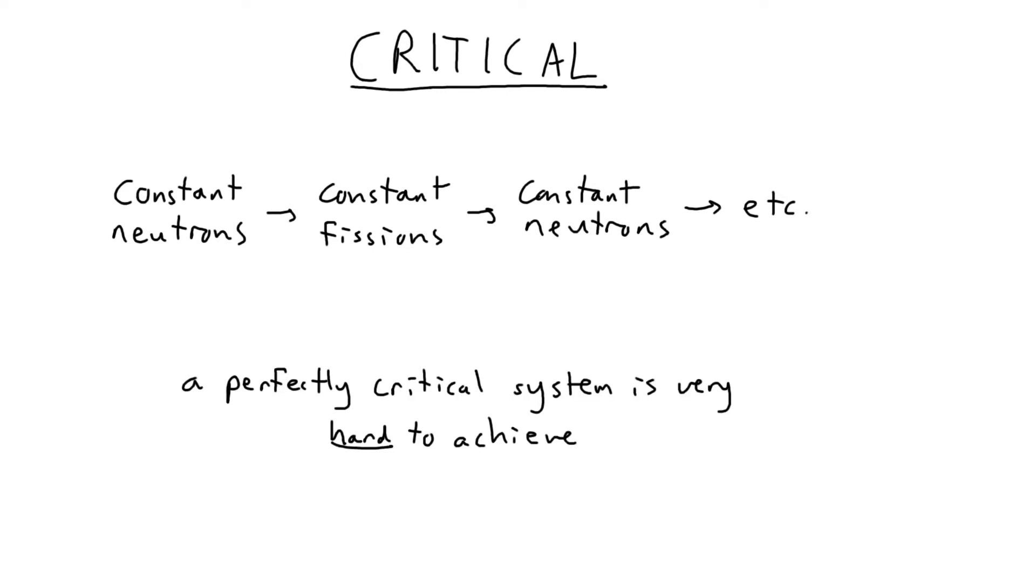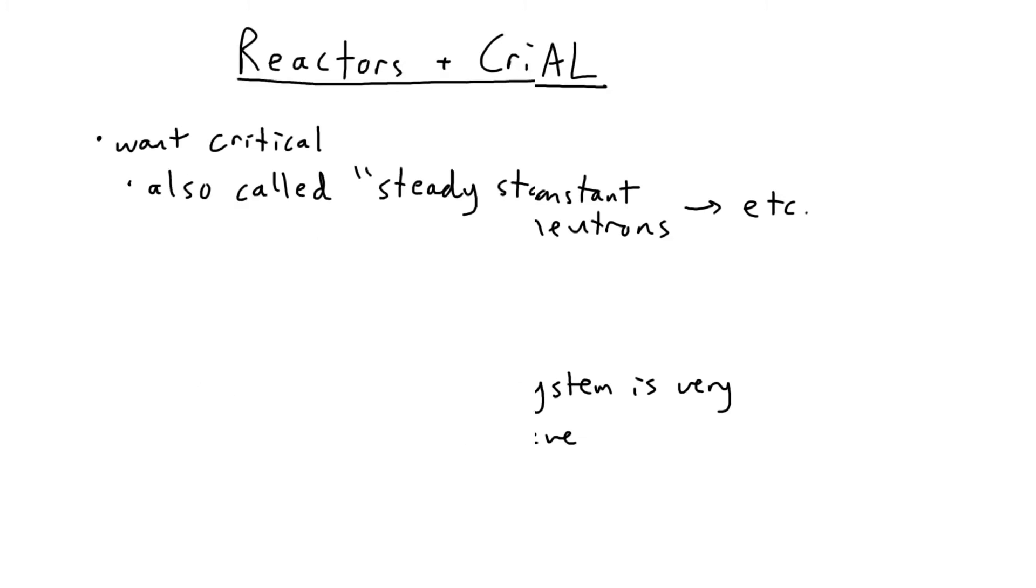Like walking a tightrope, achieving a perfectly critical system is very hard to do. It is very easy for the reaction to go subcritical or supercritical, and that would happen very quickly. Much more quickly than a human or even a computer system could control.